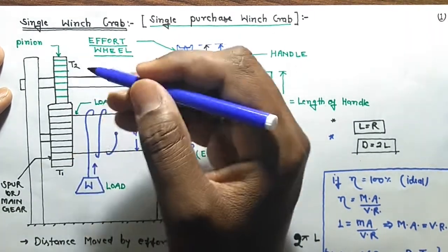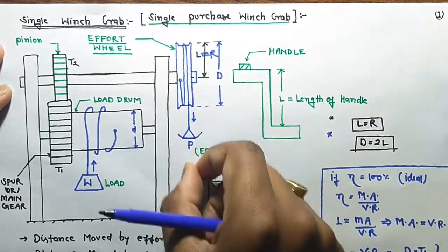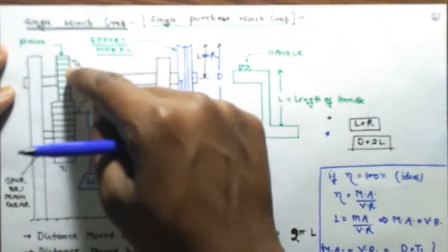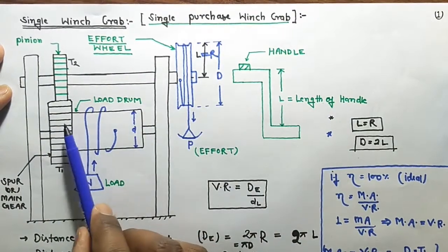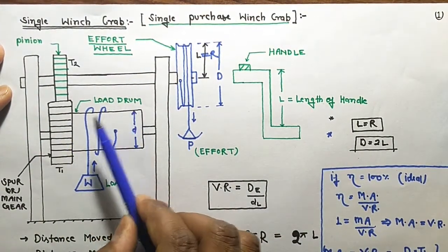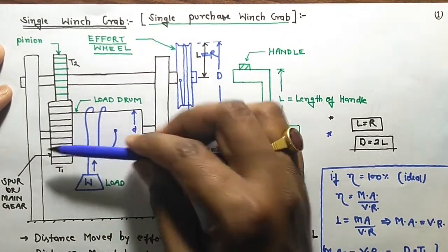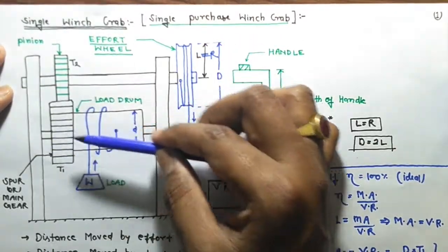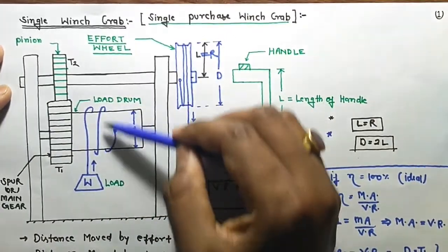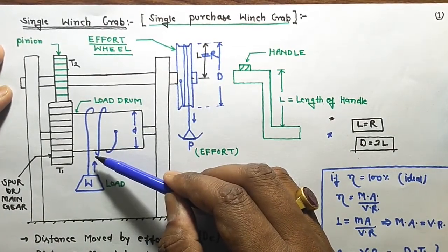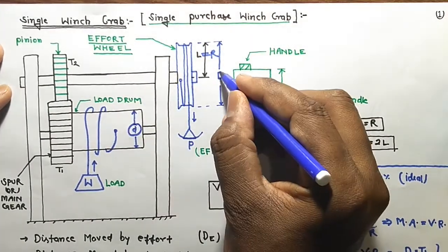The gear ratio is T2 by T1. When the effort shaft rotates, the pinion rotates and meshes with the main spur gear, causing the main gear to also rotate. The main gear is on the load drum shaft. We call the small drum diameter 'd' and the large load drum diameter 'D'. When the load drum rotates, the chain moves and lifts the load.